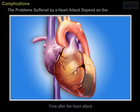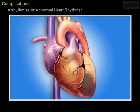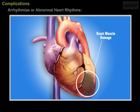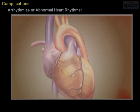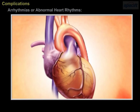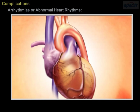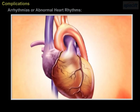The major complications are arrhythmia, or abnormal heart rhythms. A heart attack damages the heart muscle and often disrupts the electrical pathways that help in the pumping of blood. These changes cause abnormal heart rates and rhythms called arrhythmias.